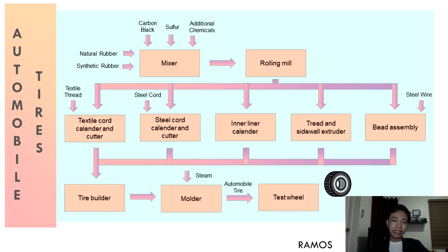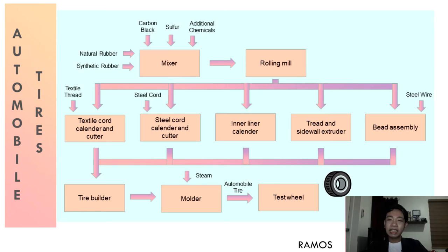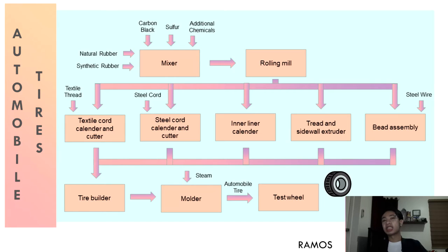During mixing, heat is applied to soften the rubber and evenly distribute the chemicals. The temperature is 160 to 170 degrees Celsius during the first stage and 100 to 110 degrees Celsius during the final stage. If the temperature is too high, the rubber compound may be damaged. After mixing, the product goes through a rolling mill that squeezes it into thick sheets. These thick sheets are then sent to various machines to make the different parts of the tire, such as the textile cord, steel cord, inner liner, tread, sidewall, and bead.